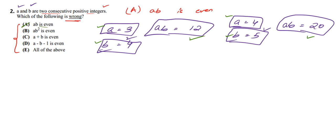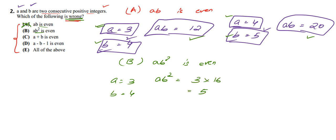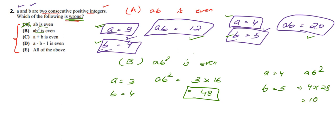Let us check option B: AB² is even. With A = 3, B = 4: AB² = 3 × 16 = 48, which is even. With A = 4, B = 5: AB² = 4 × 25 = 100, which is also even. We have considered both possible cases and in both, the result is even. Therefore AB² is even is also a correct statement, so option B is not our answer.